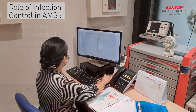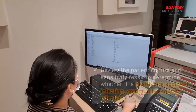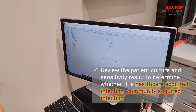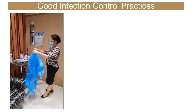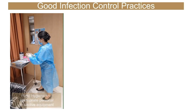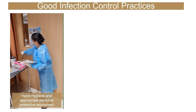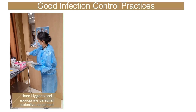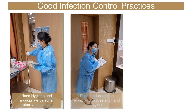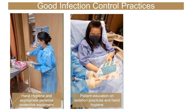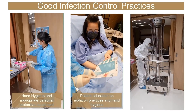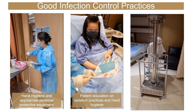As the infection control team in the hospital, our role is to prevent antibiotic resistance. Daily, we review patient culture and sensitivity results to determine healthcare-associated or community-acquired infections. We also ensure proper isolation precautions are in practice for alert organisms based on transmission routes. We educate patients on hand hygiene, PPE, and isolation practices. Once a patient is discharged, the housekeeping team uses a hyperlight disinfection robot to prevent transmission to the next patient.